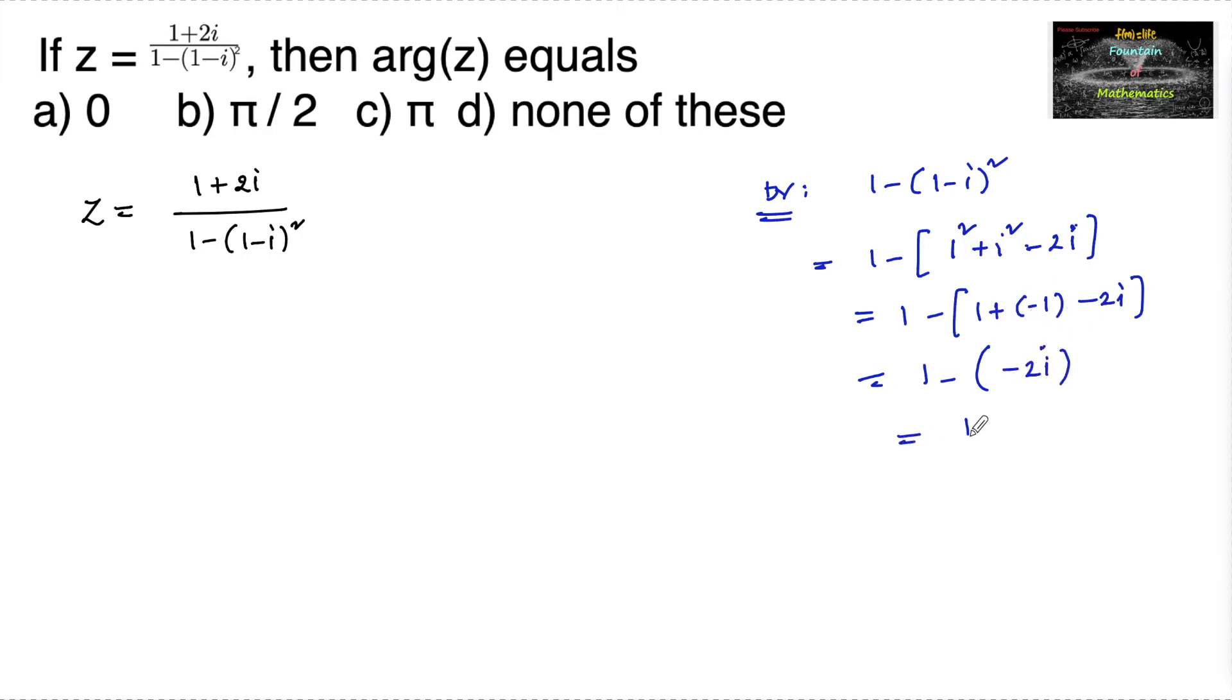So we can write this is 1 plus 2i. So the denominator is also same as the numerator. So z is equal to 1 plus 2i upon 1 plus 2i, which is equal to 1. So it's a real number.